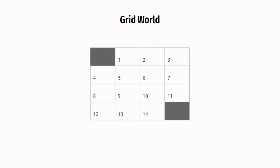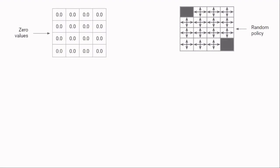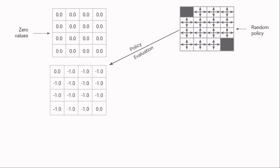To understand the next steps, let us consider a grid world example. This is a 4x4 grid with the top-left and bottom-right cells as the terminal cells. The agent can start anywhere in cells marked 1 to 14. There are four actions: left, right, up, and down. The reward for each transition is minus 1. Our states are all the individual cells. We start with a random policy where the agent takes all four actions uniformly randomly in all states. The values for all states are initialized to 0. We then perform a policy evaluation step to find the values of this random policy using our new equation, and the values for this random policy turn out to be as shown.